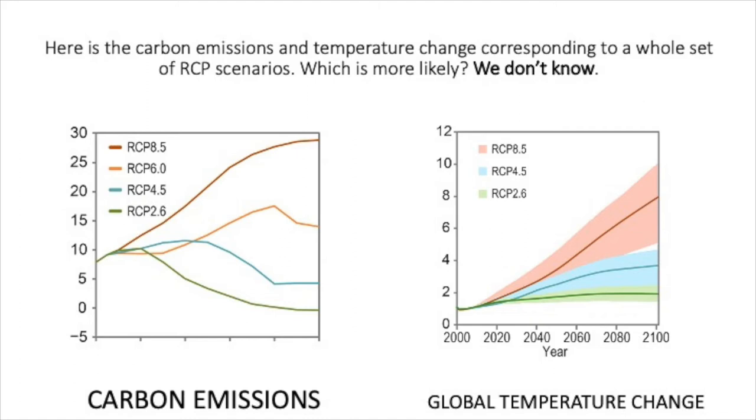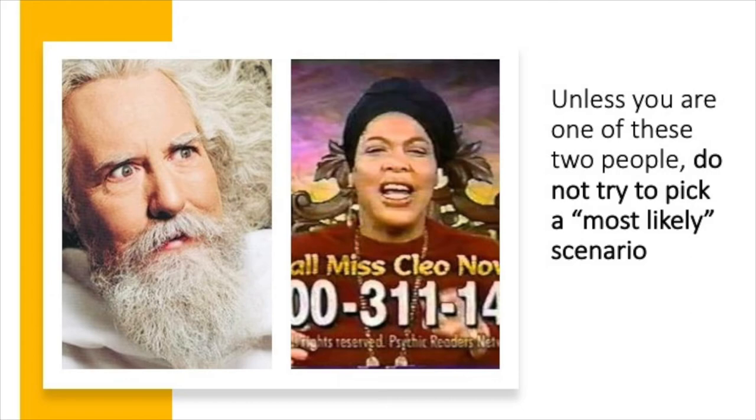Who knows which is most likely? Maybe we'll be going up the red for a while — as we currently are, just starting to bend off the red slightly — but then what if we hit a moment when catastrophes overwhelm us and we realize climate change is real? We might take a sudden dive from red to blue or even green. The bottom line: unless you are God or Miss Cleo the psychic, do not try to pick a most likely scenario. Scenarios are a bit like Schrödinger's cat — the act of observing the impacts of our scenarios actually determines whether we're going to follow those scenarios or not.